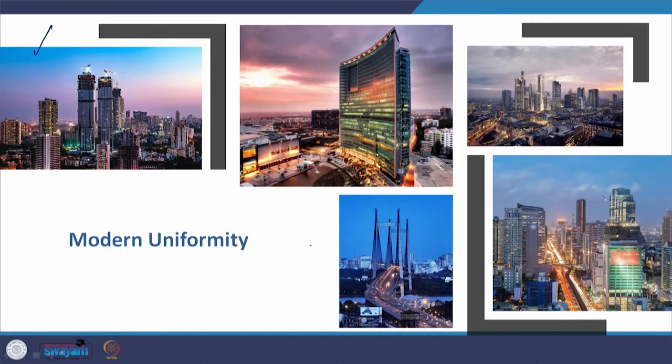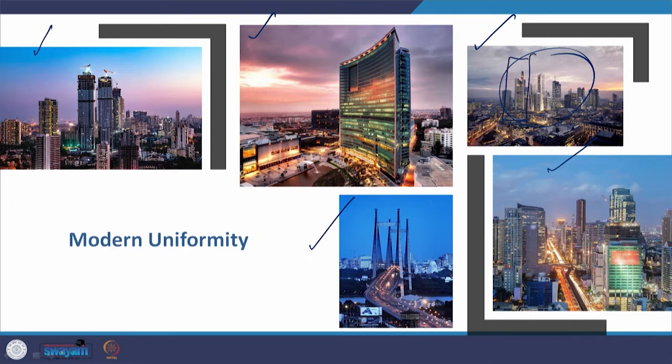Modernism on the other hand brings about uniformity. This series of pictures shows cities in India and one city from Europe. Unless you have a very fine eye for a particular building that represents a city, you cannot identify which is which. For example — this is Mumbai, this is Kolkata, this is Bangalore, this is Gurugram, this is Frankfurt. One of the ways I would identify the Frankfurt picture is because I recognize the Commerzbank by Norman Foster. But in general, without knowing the names, you would be hard-pressed to identify which city it is.